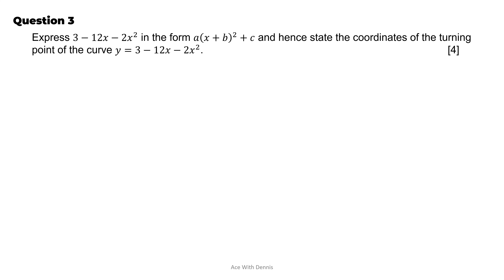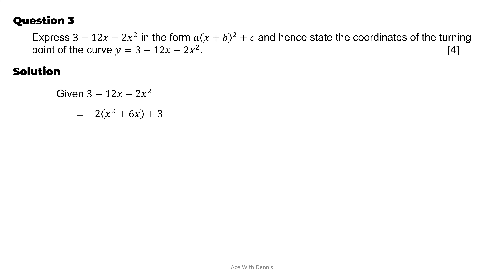Question 3. Express 3 minus 12x minus 2x squared in the form a(x plus b) squared plus c. Hence state the coordinates of the turning point of the curve y equals 3 minus 12x minus 2x squared. We complete the square. Given 3 minus 12x minus 2x squared, we first factorize out negative 2: negative 2 times (x squared plus 6x) plus 3. Then convert to completing-the-square form: negative 2 times (x plus 3) squared minus 9, plus 3.